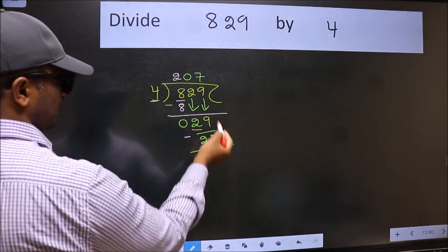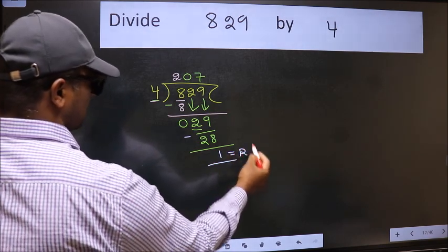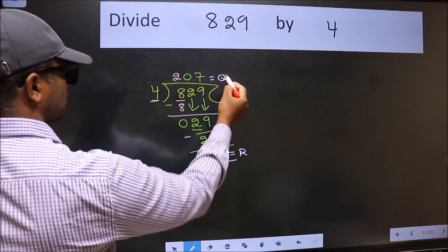No more numbers to bring down. So we stop here. This is our remainder and this is our quotient.